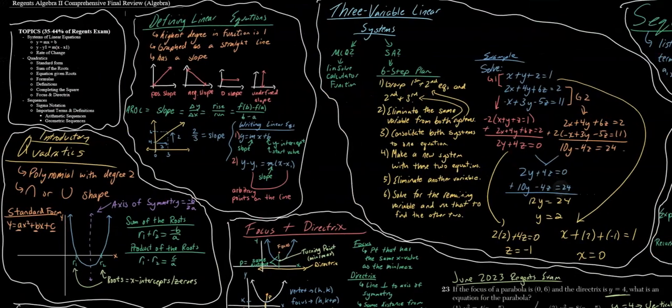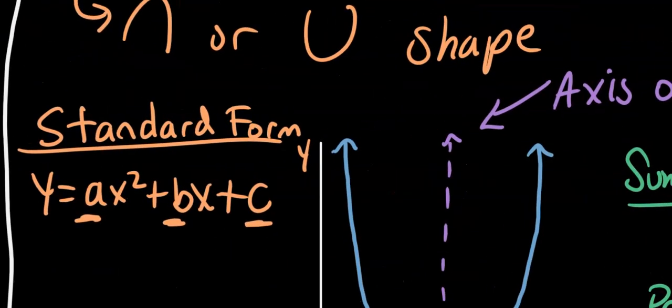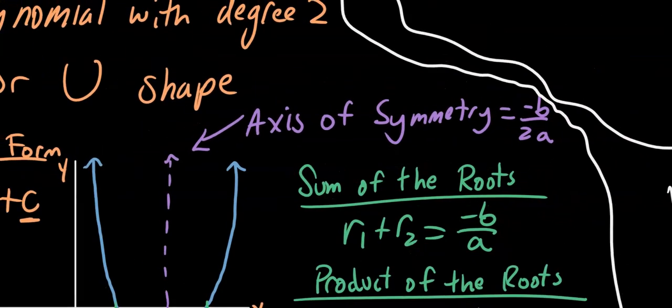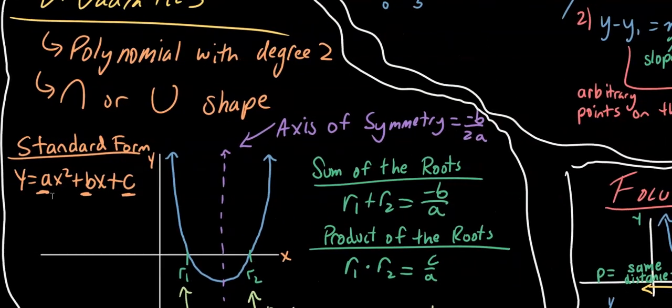Next up is quadratics. Quadratics are polynomials with a degree of 2 and have a U or horseshoe shape. Their standard form is y equals ax² plus bx plus c. They are symmetrical, and their axis of symmetry is negative b over 2a, where b and a are the same values from the standard form equation. If your quadratic is not in that form, manipulate it algebraically to get it into standard form.